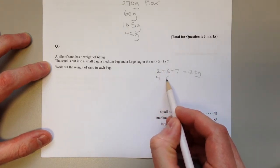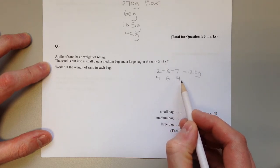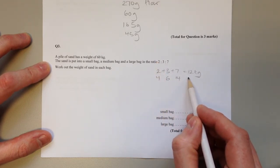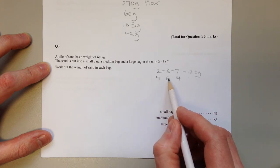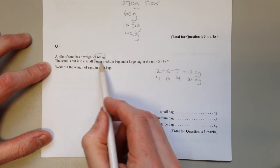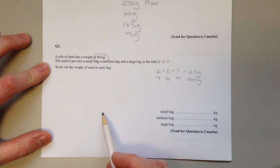You could have 4, then 6, then 14. That's the same ratio but altogether that is 24 kilograms. We could carry on in the same manner until we get up to 60 kilograms.